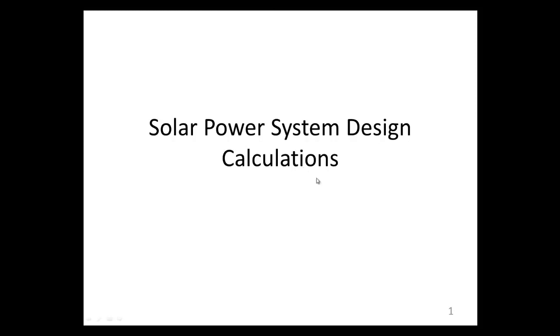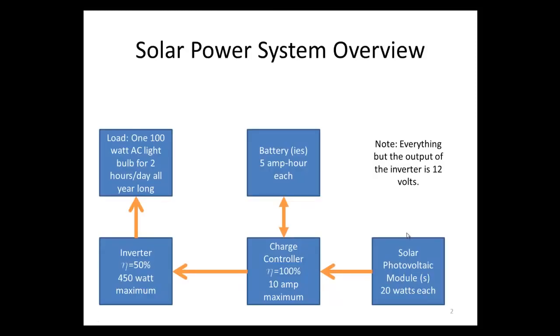In this recording, we're going to talk about solar power system design calculations. This is our general view of our solar power system. We have a couple different things to define. The load is something like a light bulb or a fridge — anything that uses electricity, anything you plug in your house. In this example, we're going to be using a 100-watt AC light bulb, and we're going to be using it for two hours a day all year long.